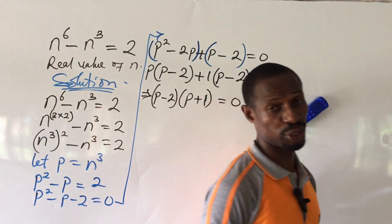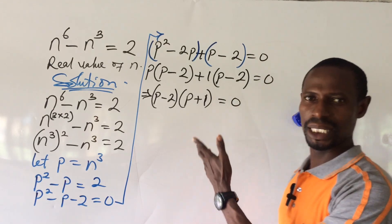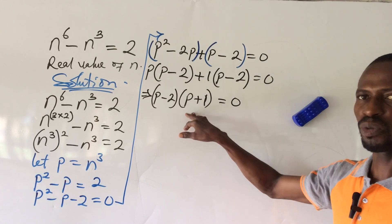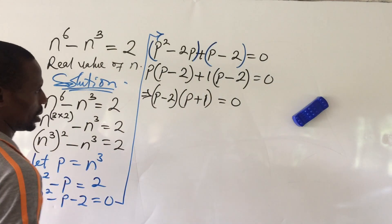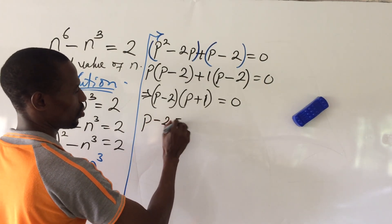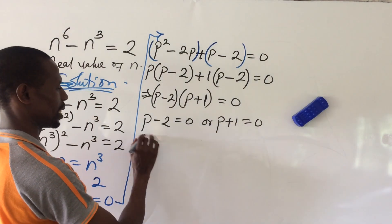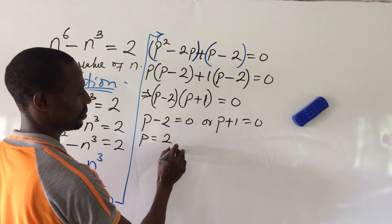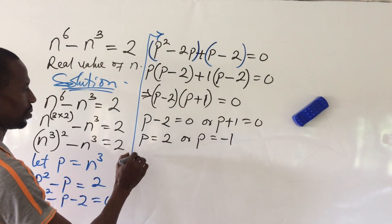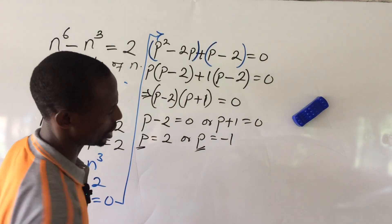Applying the zero product rule, we equate each factor to 0. This gives us p minus 2 equal to 0 or p plus 1 equal to 0, so p is equal to positive 2 or p equals negative 1. We take these as case 1 and case 2.